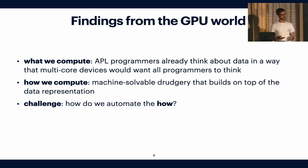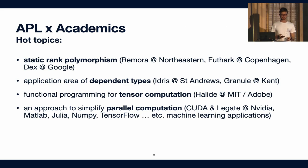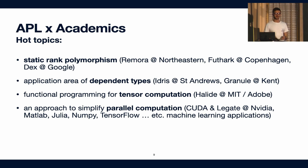So the challenge is: can we really automate how we execute array programs? That gets us to academics. The hot topics in academics on the topic of APL — the first one is called static rank polymorphism. It's studied at Northeastern in the US as Remora, and then as Futhark in Copenhagen. Google also researches it through a language called DEX. These languages typically apply something called dependent types to help out. Dependently typed languages exist as Idris, developed at St Andrews, and Granule, developed at the University of Kent.